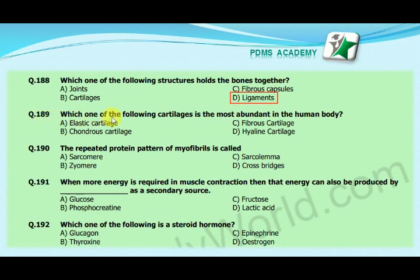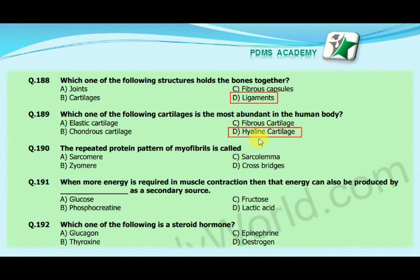Our next MCQ is: which one of the following cartilages is the most abundant in the human body? Option A: elastic cartilage, option B: chondrous cartilage, option C: fibrous cartilage, option D: hyaline cartilage. Our correct answer is D, hyaline cartilage.